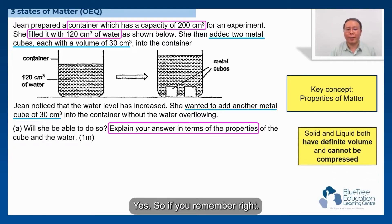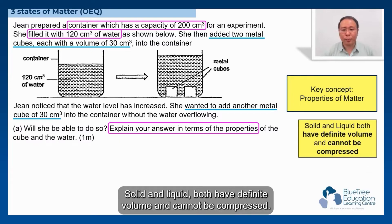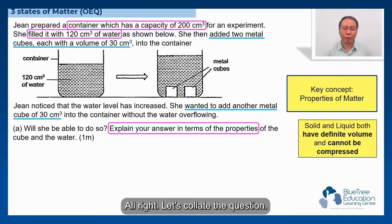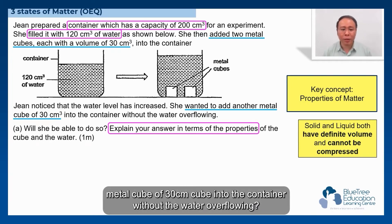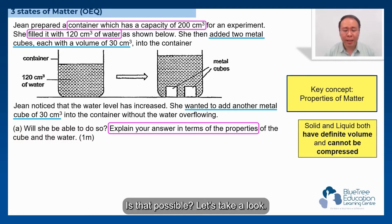So if you remember, solid and liquids both have definite volume and cannot be compressed. Alright, let's continue the question. Jean noticed that the water level has increased and she wanted to add another metal cube of 30 cm cubed into the container without the water overflowing. Is that possible?